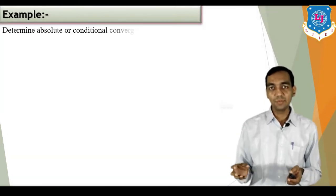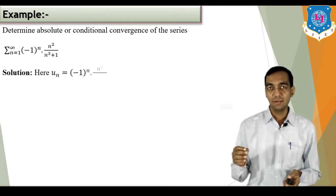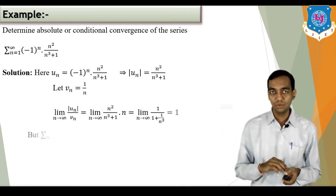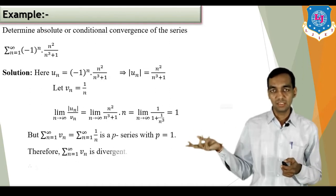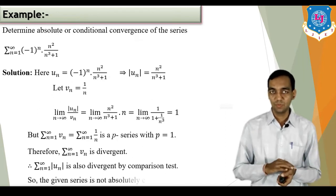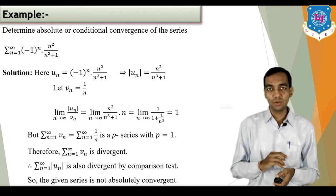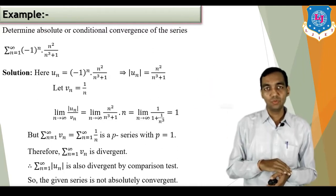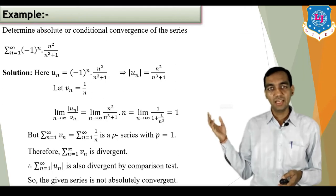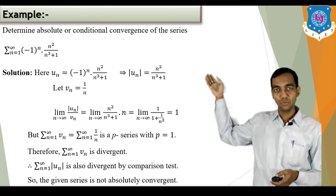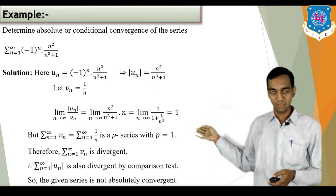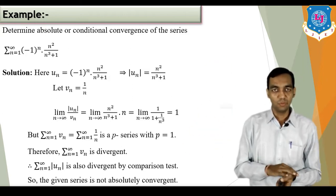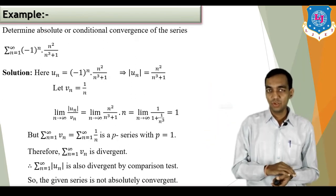Now we are going with an example: determine the absolute or conditional convergence of the series sigma (-1)^n · n²/(n³+1). Here u_n = (-1)^n · n²/(n³+1), so |u_n| = n²/(n³+1). This mode u_n is of algebraic form — numerator and denominator are both polynomials — so we are going to apply the comparison test. Take v_n from the dominant powers: n²/n³ = 1/n, so v_n = 1/n.